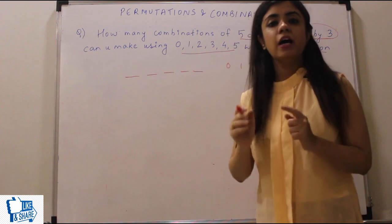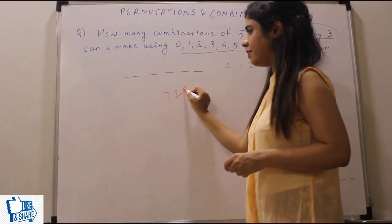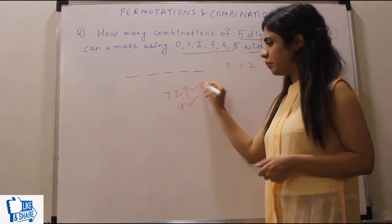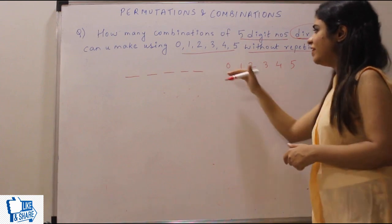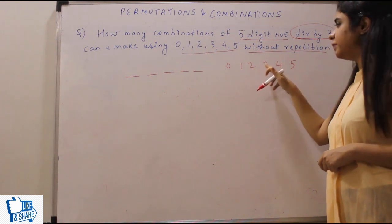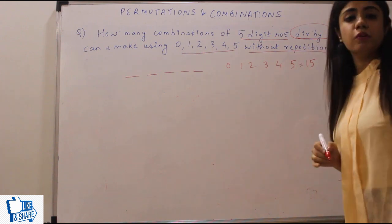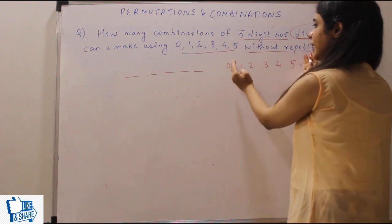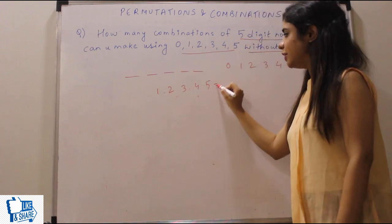A number is divisible by 3 when the sum of its digits is divisible by 3. For example, 729: 7+2+9 = 18, which is divisible by 3. Now if I add all the digits 0 to 5: 0+1+2+3+4+5 = 15. Since 15 is divisible by 3, one valid combination is to take the digits 1, 2, 3, 4, 5 — their sum is also 15.